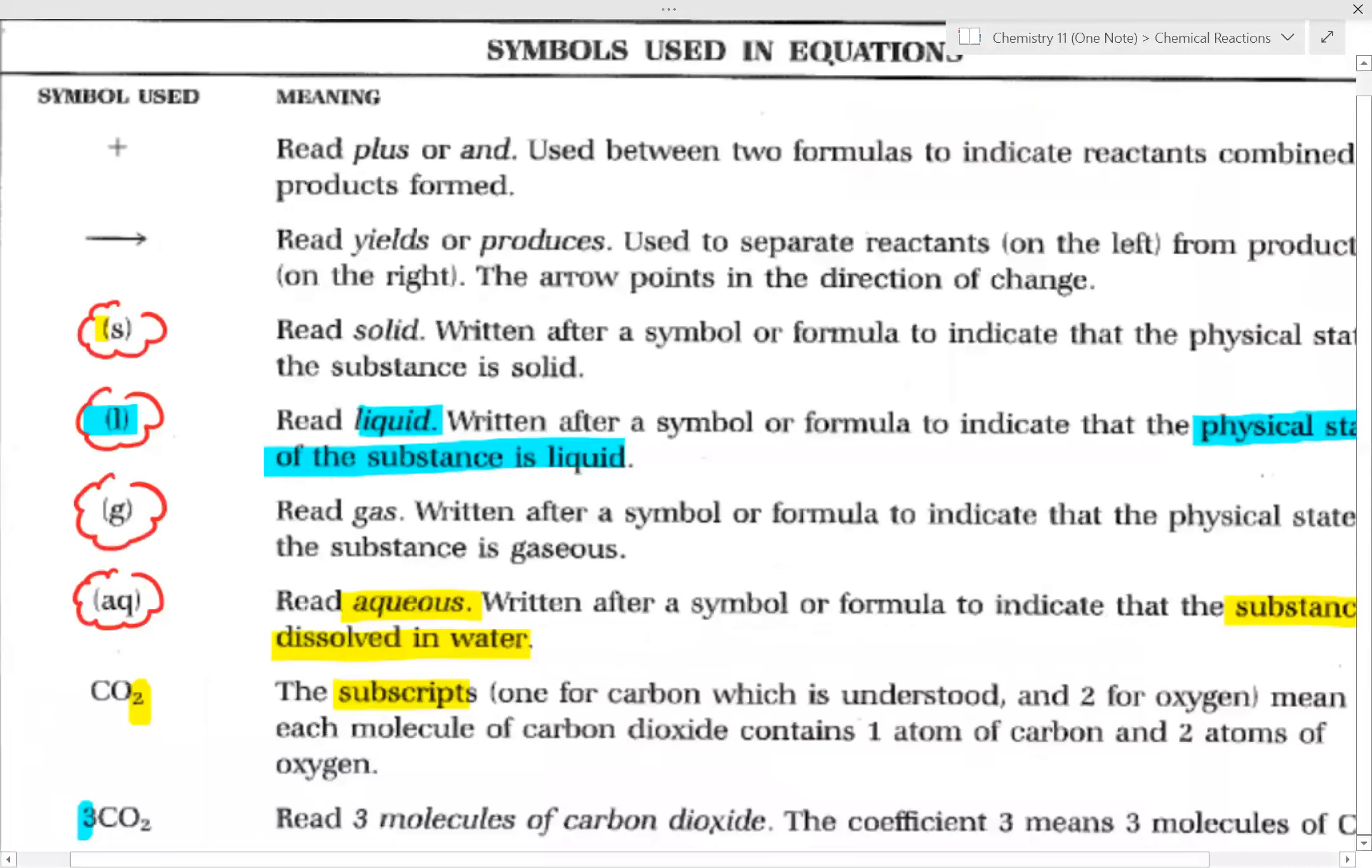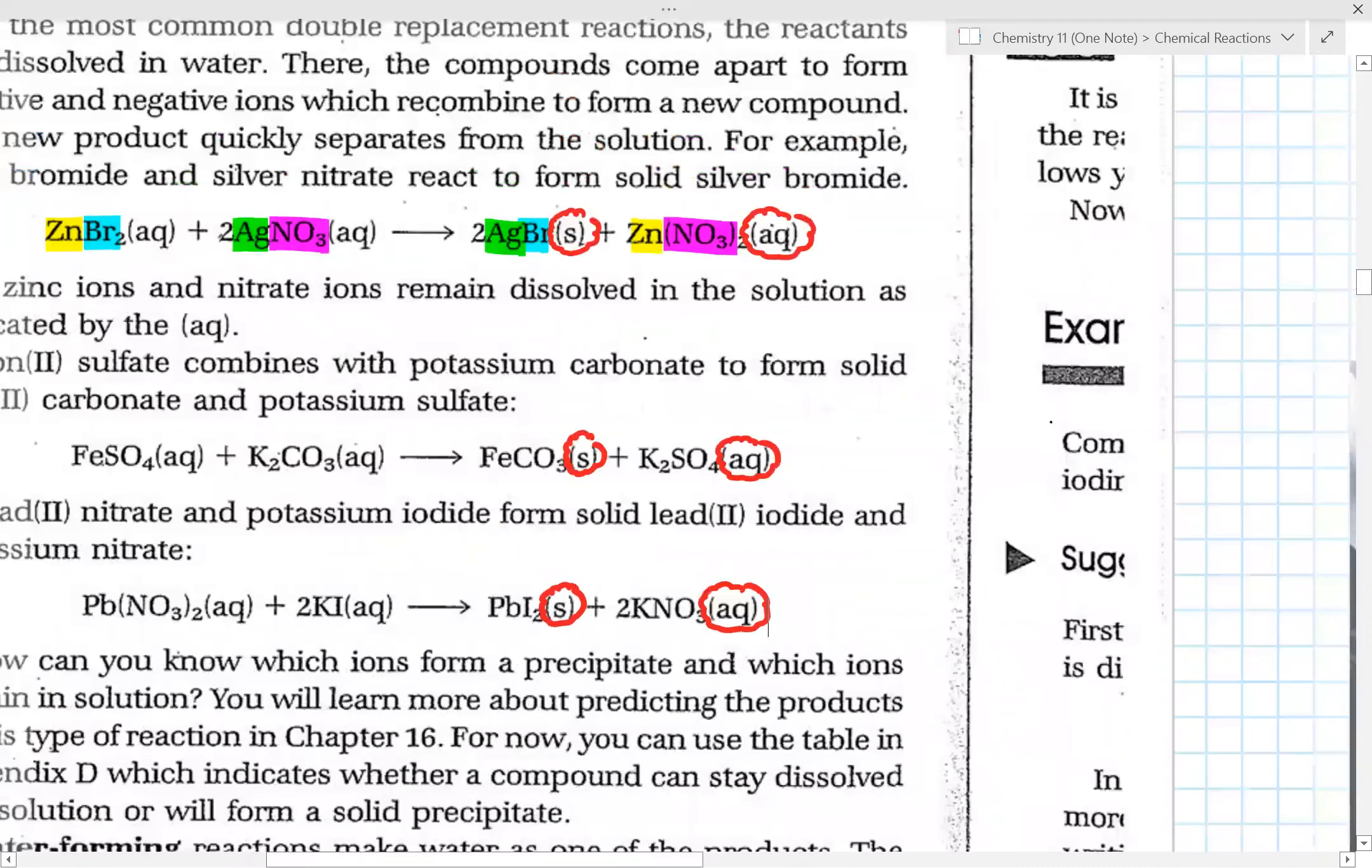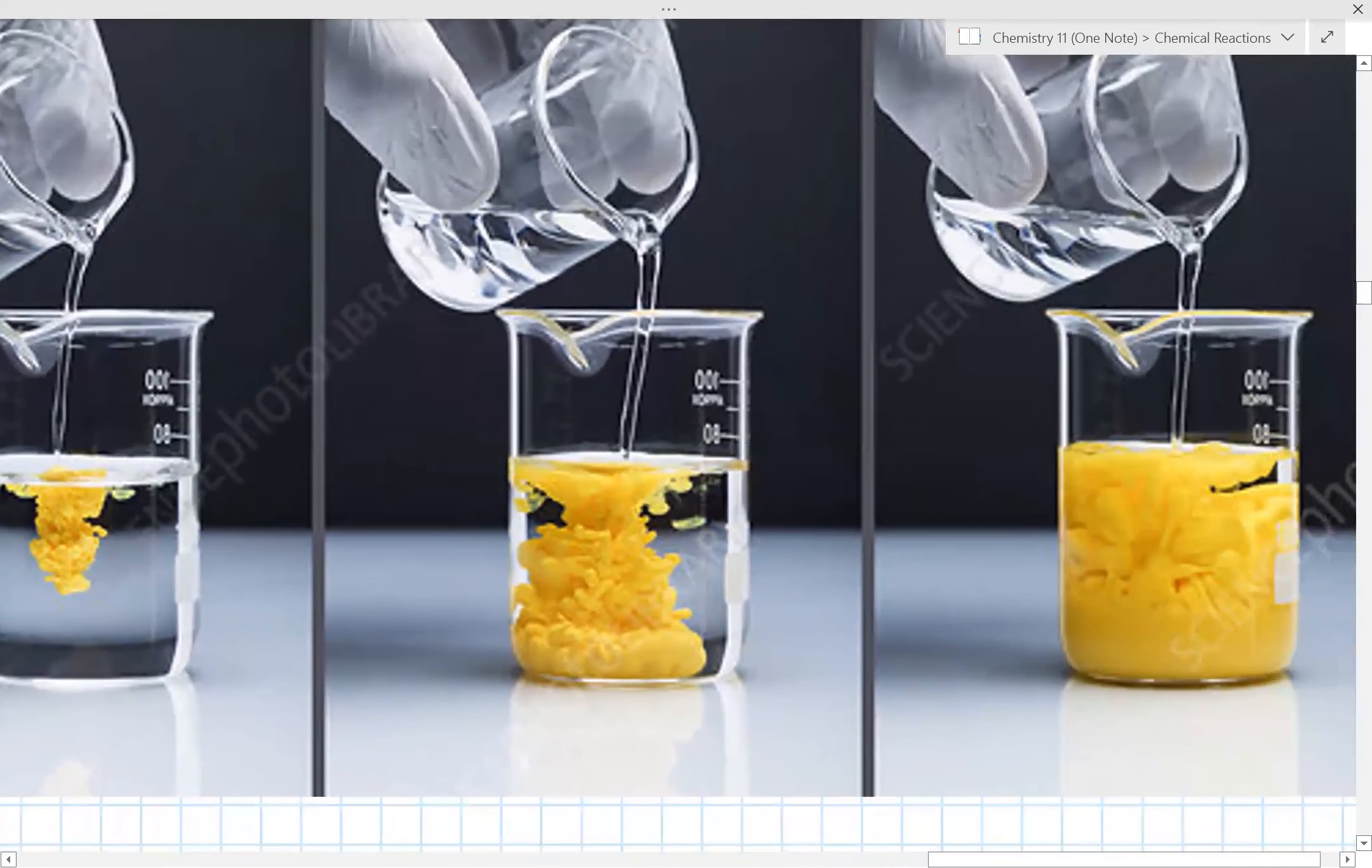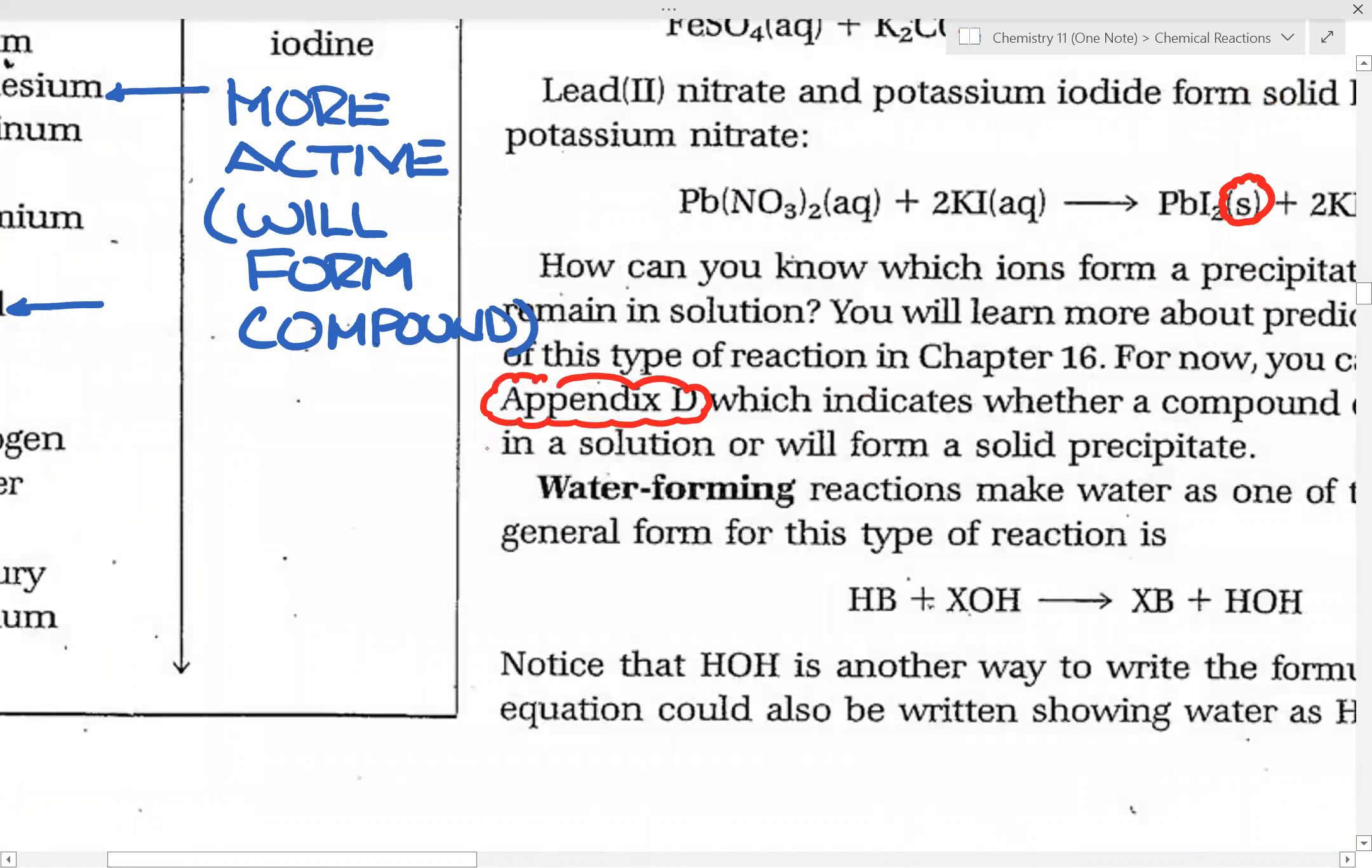Now, before we do that, please remember. What does S and AQ mean? S means that it is a solid. AQ means that the substance dissolves in water. So, going back to this particular question, in a double replacement reaction, how do you know which one forms a solid and which one dissolves in solution? Now, what do I mean by solid? So, let's say you have a picture here. Notice you have two solutions. And when you mix them together, one of them, you form this yellow solid, which we call a precipitate. So, how do we figure this out?